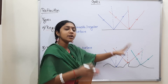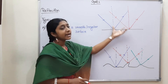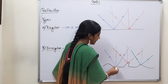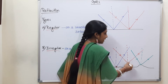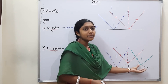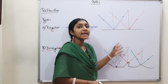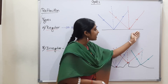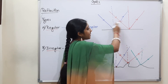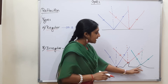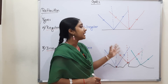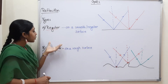The two laws of reflection are valid at every individual point — whether it is a regular or irregular surface. For a regular surface, light reflects in the same amount at every point. For an irregular surface, the reflection differs from point to point.